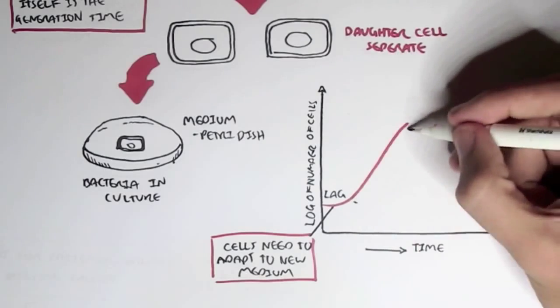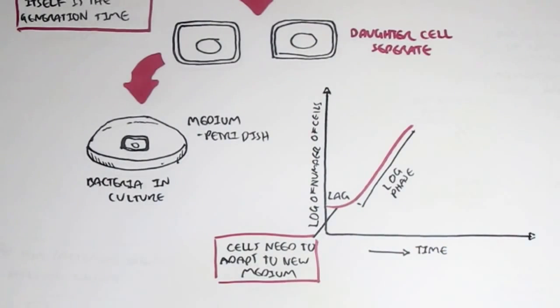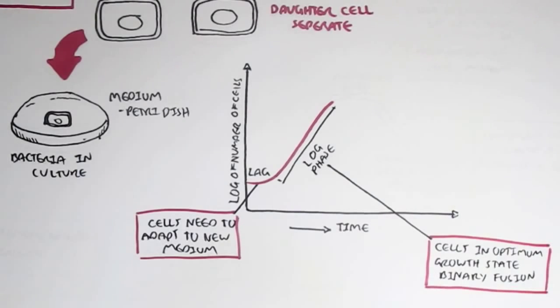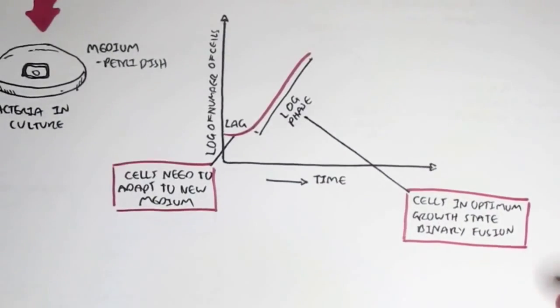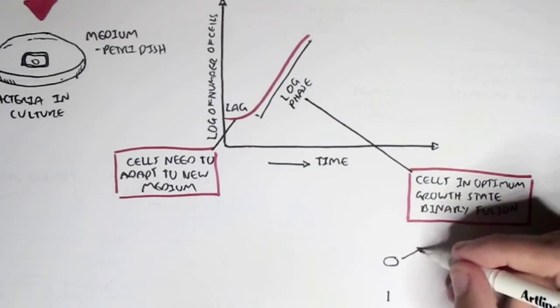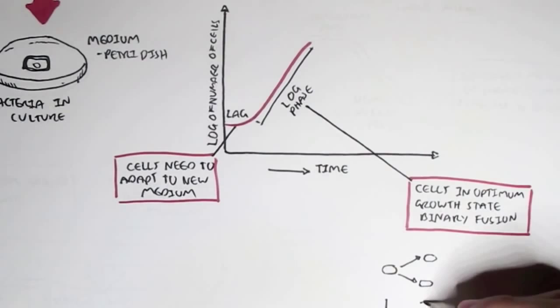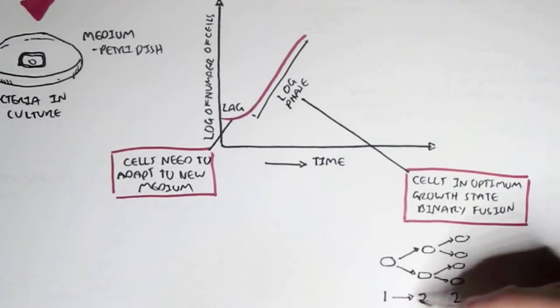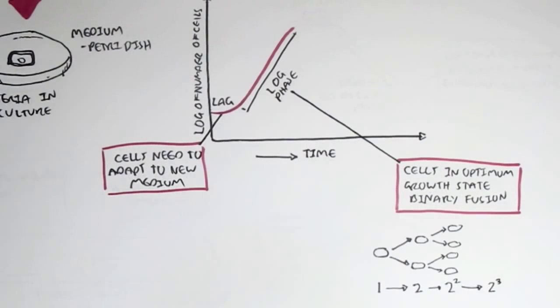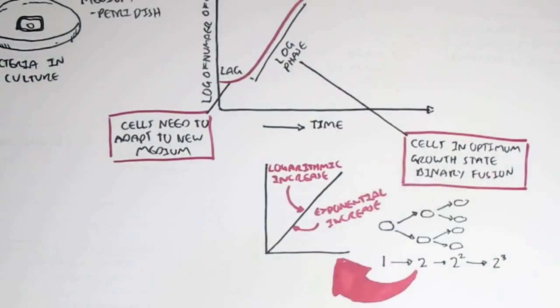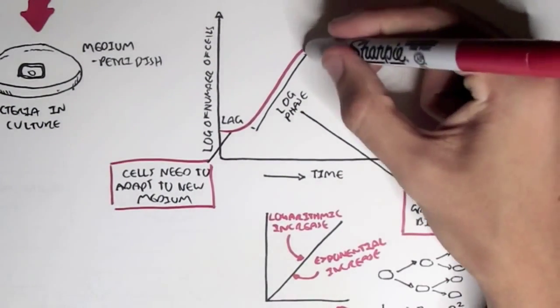After some time, we have the log phase, where cells are in optimum growth state and perform binary fusion, reproduction process. And as you can see, during the log phase, there is a logarithmic increase in cell number. So what this means is that we start off with one bacteria. When it performs binary fusion, we have two. And then binary fusion again, we have two to the power of two. We have four. And then this process will continue, two to the power of three, and then two to the power of four. And this process, where the bacteria keeps dividing in a linear sort of fashion, is known as a logarithmic increase in growth, or an exponential increase. And so this is the log phase.